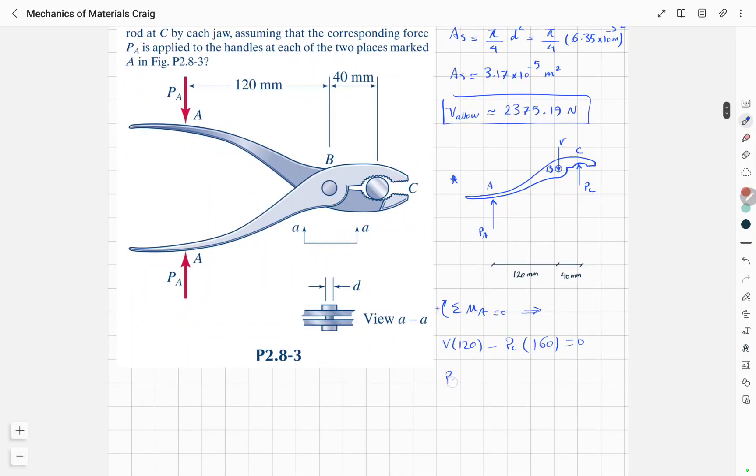So Pc would be 3 over 4 V. And since we already determined the value for allowable shear, we can substitute it in this equation. So Pc allowable would be 3 over 4 V allowable.